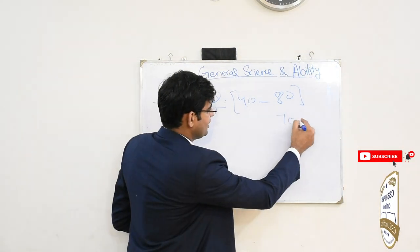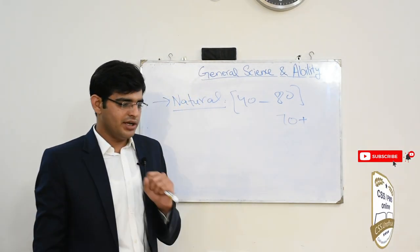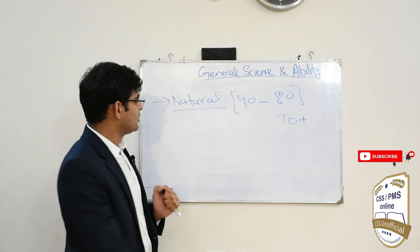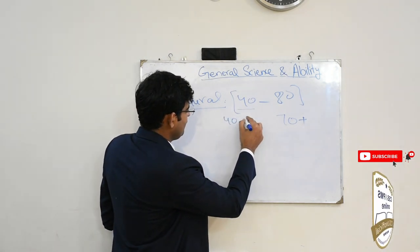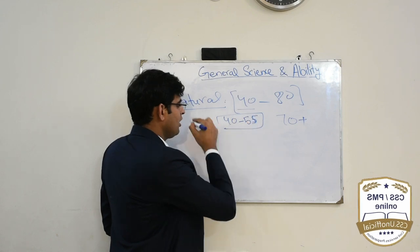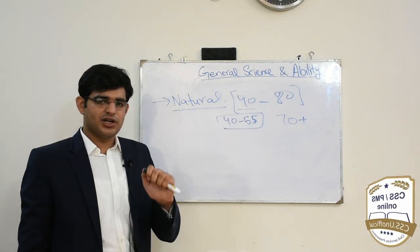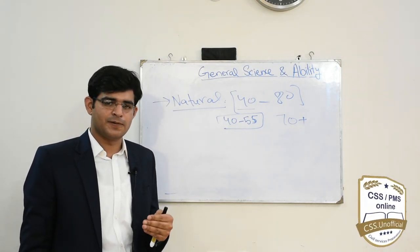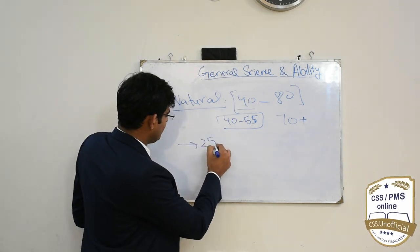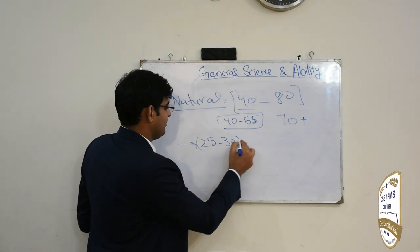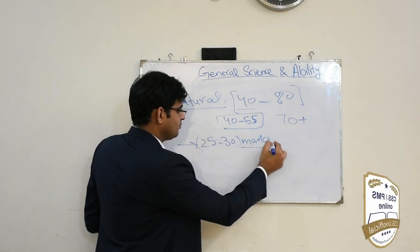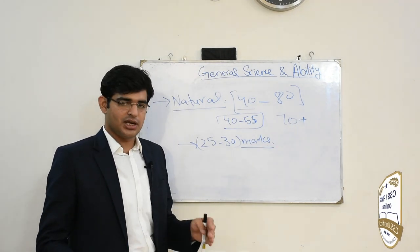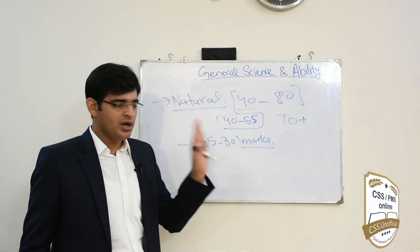جب صرف natural science students دیکھیں تو وہ 70 plus score کرتے ہیں، جبکہ social science students 40 سے 55 کے درمیان لاتے ہیں۔ اس وجہ سے یہ difference create ہوتا ہے کہ جب allocation کی باری آتی ہے تو یہ 25 سے 30 marks کا gap ایک اچھا group بھی cost کر سکتا ہے اور allocation بھی cost کر سکتا ہے۔